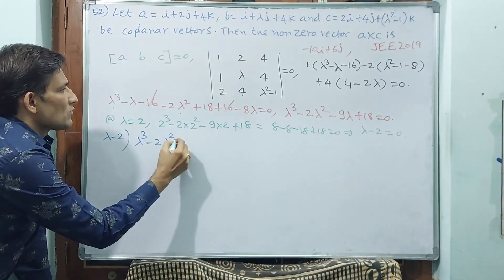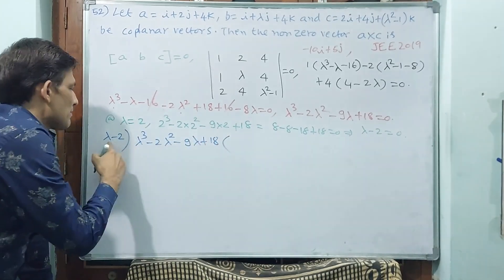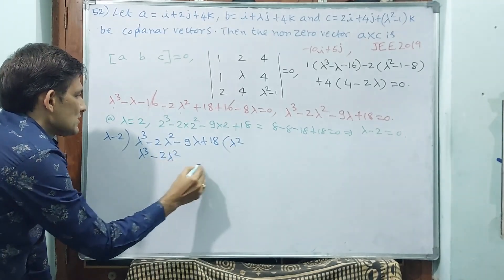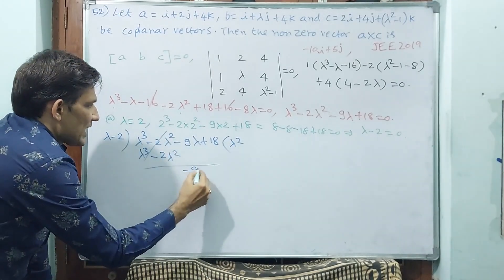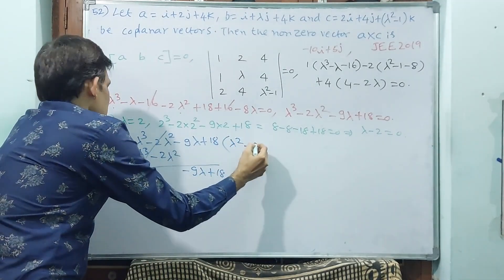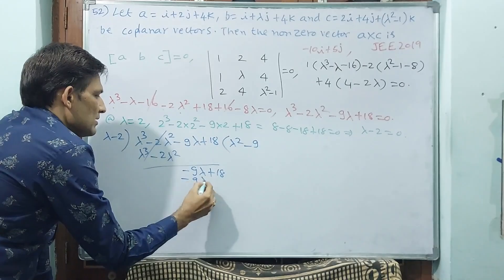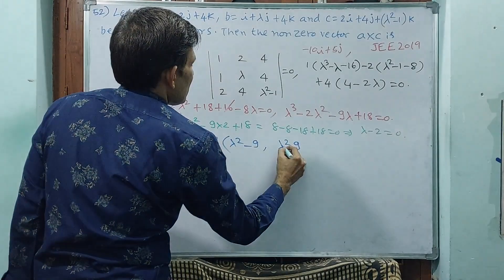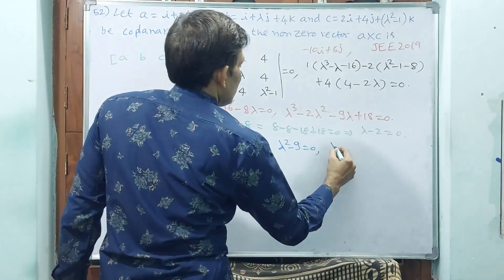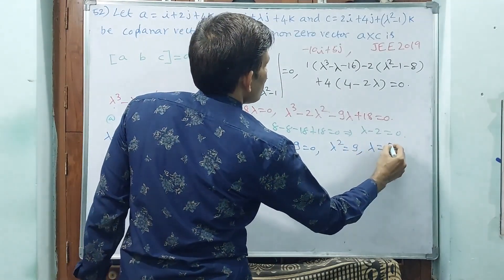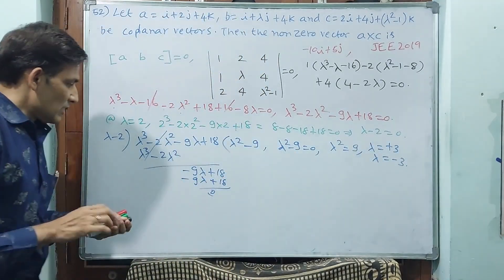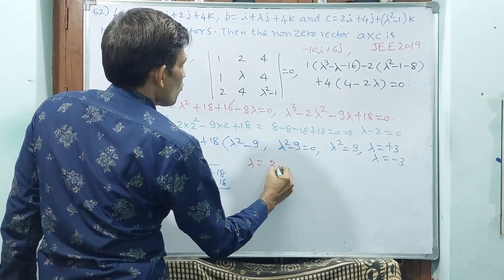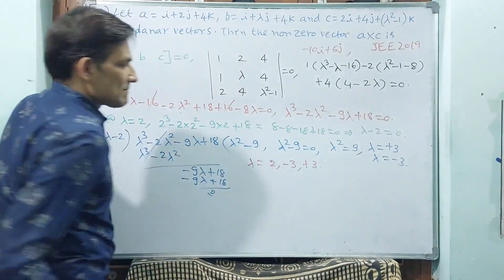Dividing lambda cubed minus 2 lambda squared minus 9 lambda plus 18 by (lambda minus 2), we get lambda squared minus 9. Setting lambda squared minus 9 equal to 0 gives lambda squared equals 9, so lambda equals plus 3 or minus 3. The three roots are lambda equals 2, minus 3, and plus 3.